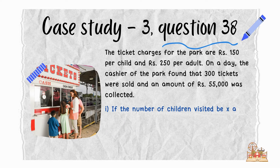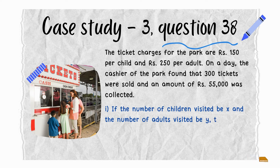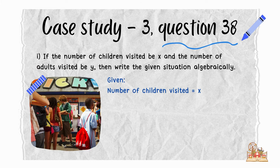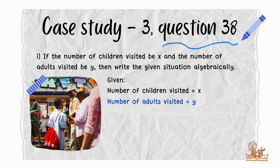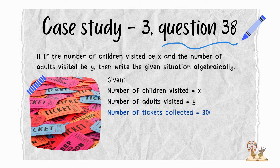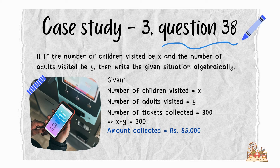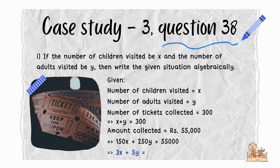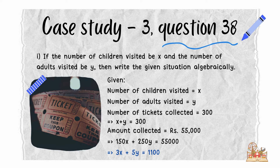If the number of children visited be x and the number of adults visited be y, we write the situation algebraically. Since 300 tickets were sold: x + y = 300. Since rupees 55,000 was collected: 150x + 250y = 55,000. Dividing the second equation by 50, we get 3x + 5y = 1100.